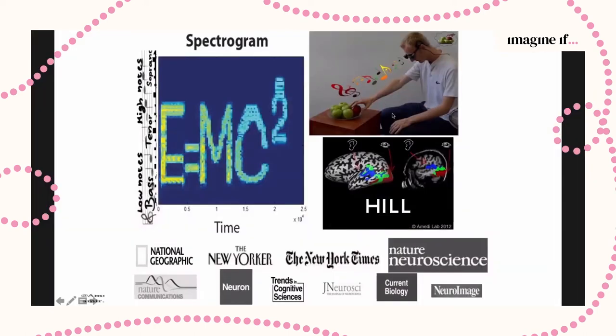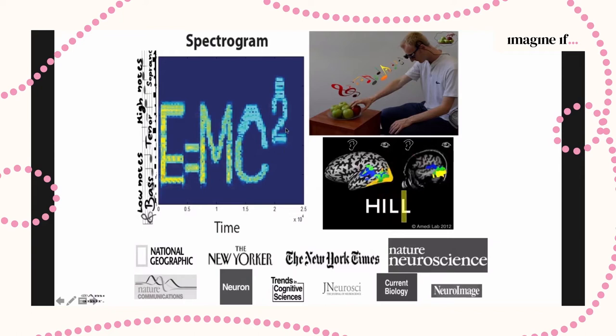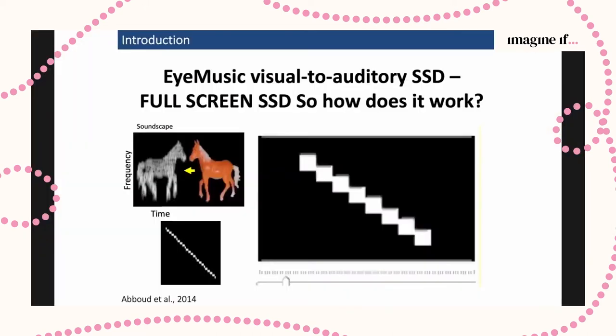What I'm showing you here is a spectrogram, which shows high tones, middle tones, and low tones over time. If I play it to you, it will sound like very complex sounds — but actually inside these sounds there are shapes hidden. Like in this case, the famous equation of Albert Einstein. They listen to it and they know what's written on the wall.